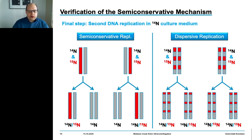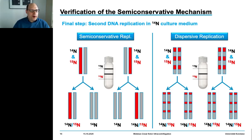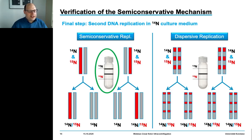For the semi-conservative replication mechanism, two populations are expected; whereas a single reaction product is expected for dispersive replication. In terms of isopycnic separation, this is two bands versus a single band. Meselson and Stahl finally detected two different populations of DNA, thus verifying the semi-conservative replication mechanism proposed by Watson and Crick.